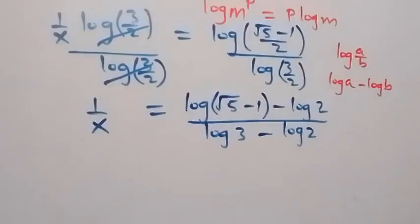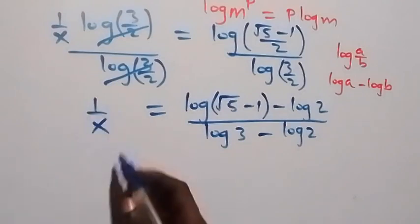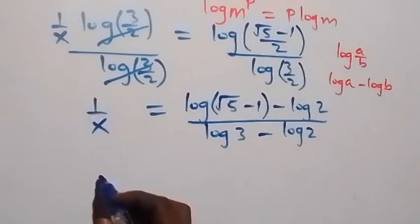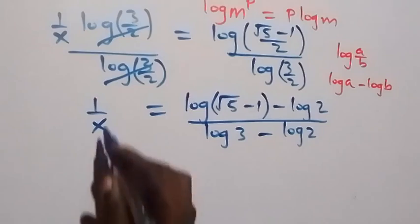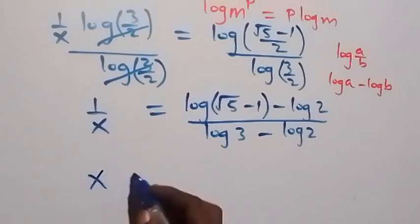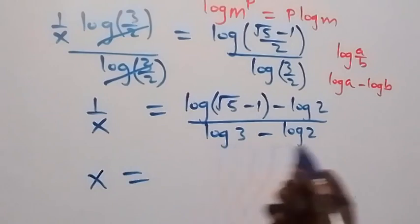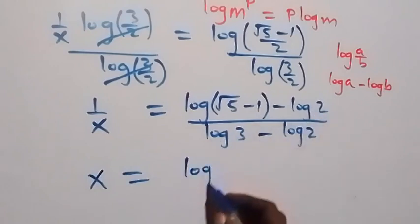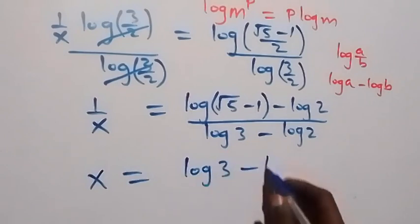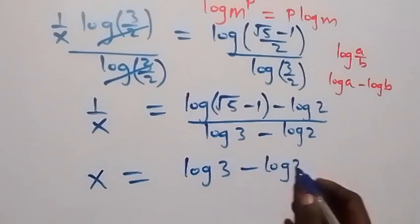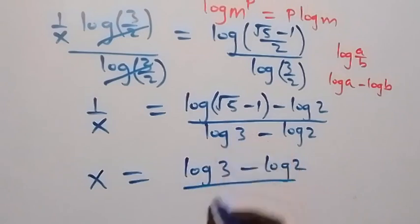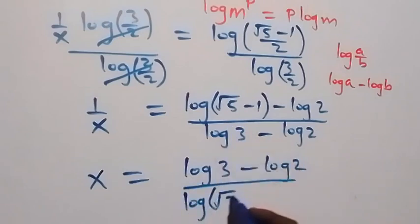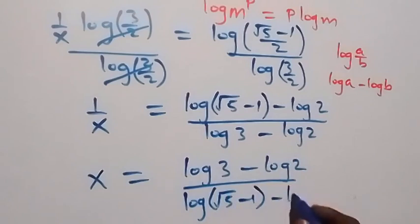Don't forget, we need to find x, not 1 over x. So we take the reciprocal on both sides. The reciprocal gives us x, which equals the denominator going up. So x equals (log 3 minus log 2) divided by (log(root 5 minus 1) minus log 2).